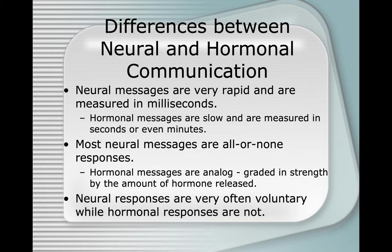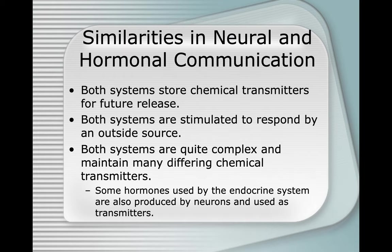Neural messages are very rapid and are measured in milliseconds. Hormonal messages are slow and are measured in seconds or even minutes. Most neural messages are all-or-none responses, while hormonal messages are analog — graded in strength by the amount of hormone released. Neural responses are very often voluntary, while hormonal responses are not voluntary. Both systems store chemical transmitters for future release and are stimulated to respond by an outside source.